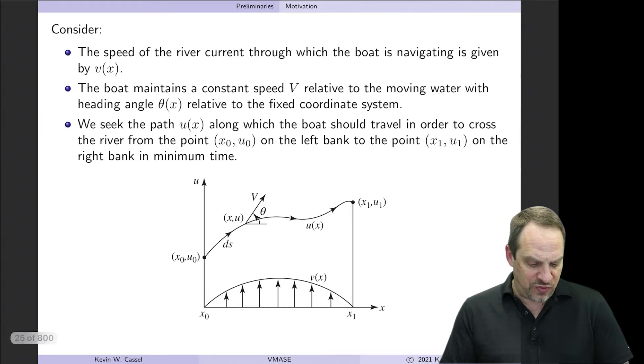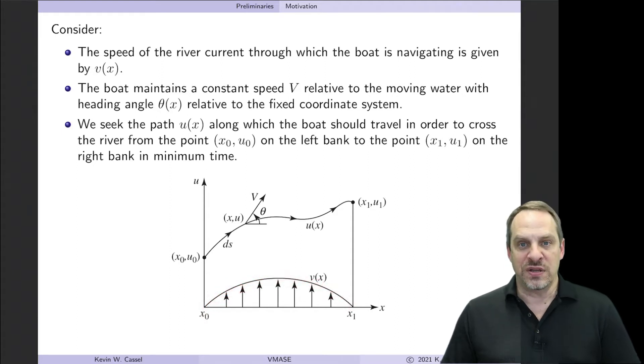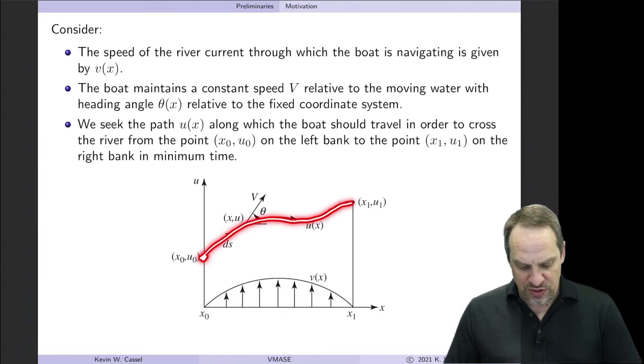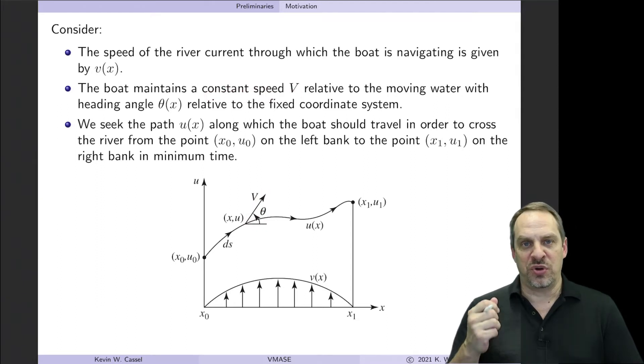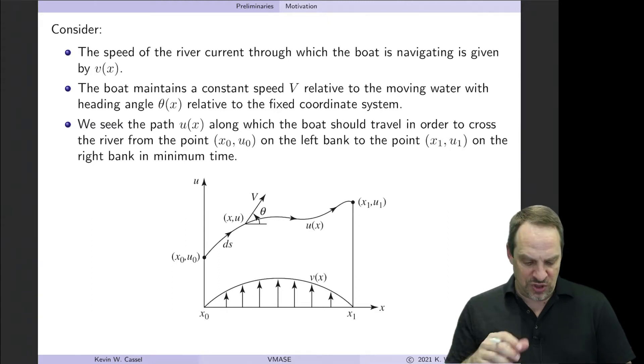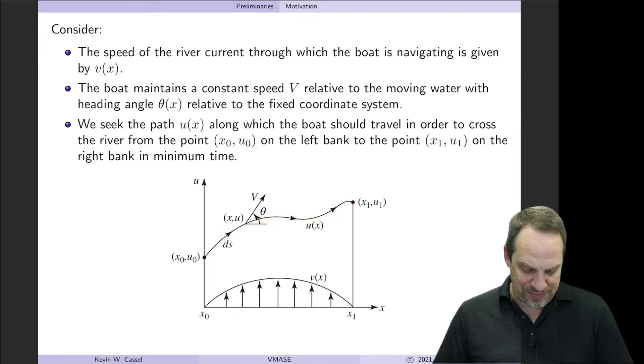So here's the setup. We have a river. And the speed of the river is V as a function of X. Here's the left bank and the right bank of the river from X0 to X1. And we have the speed of the river V as a function of X. We're going to start at this point, X0, U0 on the left bank. And we have a point, X1, U1 on the right bank. So we're going to start here and then follow a path across the river in our boat in order to get to that point on the other side. So the capital V here will be the constant speed of the boat relative to the moving water. So I just put the boat's motor on constant throttle. So it goes at the same speed relative to the moving water. And there'll be a heading angle, theta of X, that you see from the horizontal there. And that determines the rudder, right? So the rudder and the speed determine my path across the river. So that's what we're looking for.